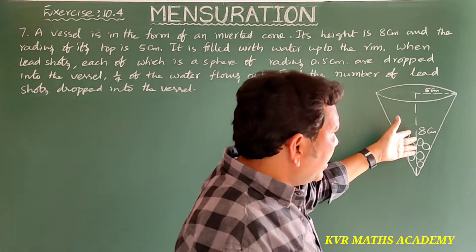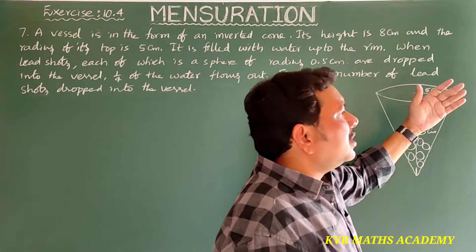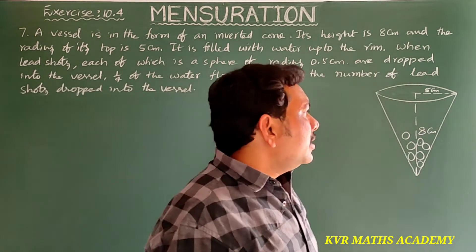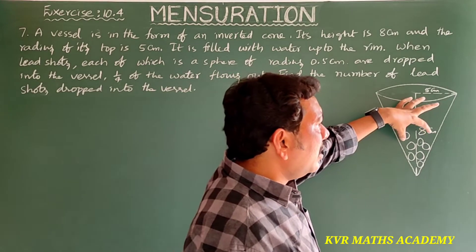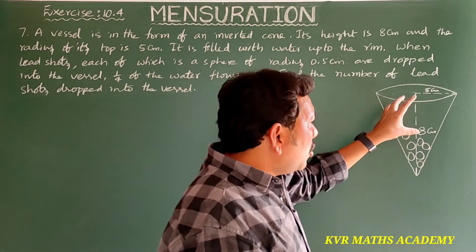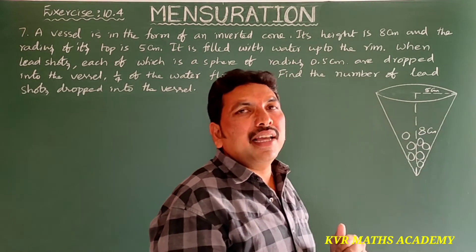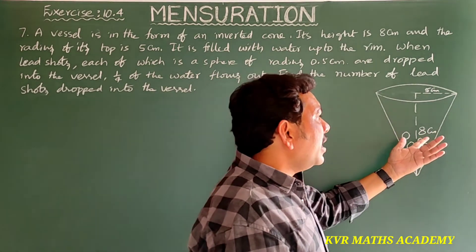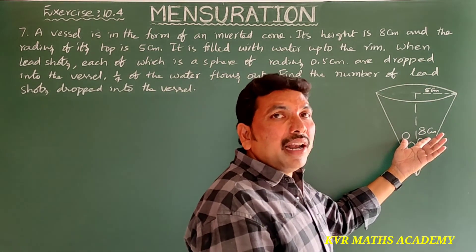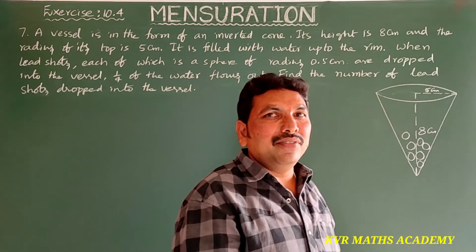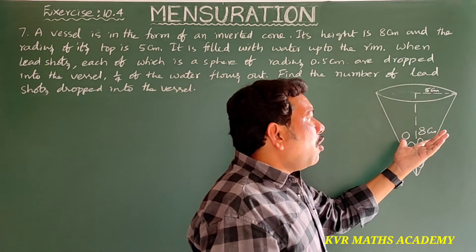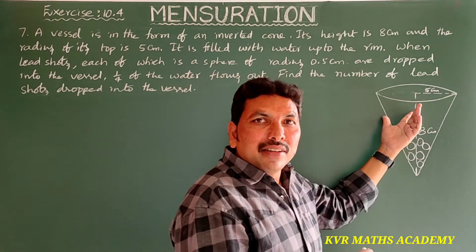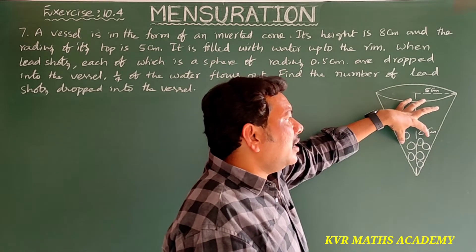A vessel is in the form of an inverted cone of height 8 centimeters and radius of the top is 5 centimeters. It is full of water up to the rim. Some lead shots of the shape of spheres are dropped into this vessel and 1/4 of the water flows out. We have to find how many lead shots were dropped into the vessel. Volume of the lead shots is equal to 1/4 of the volume of the vessel.